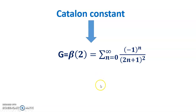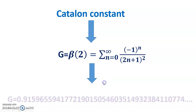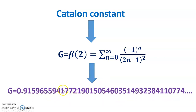Here, beta is the Dirichlet beta function. The numerical value of the Catalan constant is approximately 0.915966. It is not known whether G is irrational, let alone transcendental.